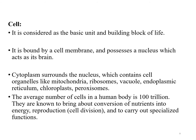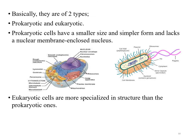A cell is the smallest basic unit and building block of life. It is bound by a cell membrane and possesses a nucleus which acts as its brain. Cytoplasm surrounds the nucleus and contains cell organelles like mitochondria, ribosomes, vacuole, endoplasmic reticulum, chloroplasts, and peroxisome. The average number of cells in a human body is 100 trillion. They carry out conversion of nutrients into energy, reproduction, and specialized functions. There are two types of cells: prokaryotic cells and eukaryotic cells. Eukaryotic cells are more specialized in structure than prokaryotic ones.